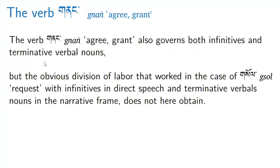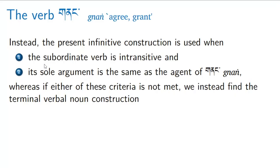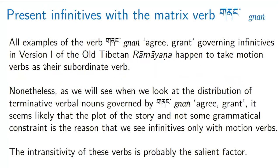Now we turn to nang, which means to grant or agree. Nang also governs both infinitives and terminative verbal nouns, but the obvious division of labor we saw with sol isn't going to work. Instead, the present infinitive construction is used when the subordinate verb is intransitive and the sole argument is the same as the agent of nang. If these criteria are not met, we instead find the terminative verbal noun construction — 'terminative' just referring to the case marker at the end of par.